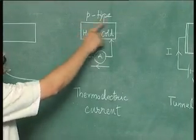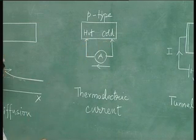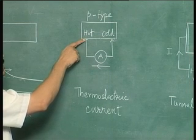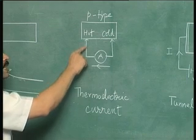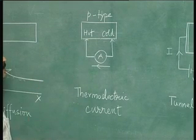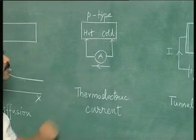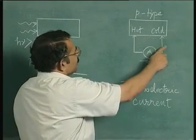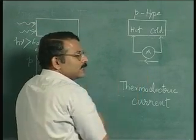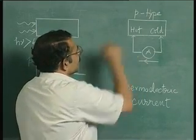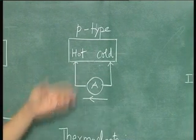Here is another example of carrier transport. The sample has two contacts, one kept at a higher temperature than the other, easily achieved by placing a soldering iron near one contact. If you connect an ammeter between the two, you will find a current flow. If the sample is p-type, the current moves from cold to hot junction. In the n-type sample, the polarity of the current is opposite. So here there is a current because of temperature gradient, and this kind of current is called thermoelectric current.